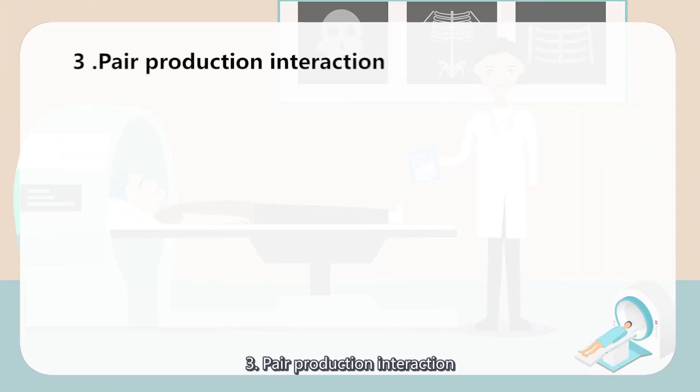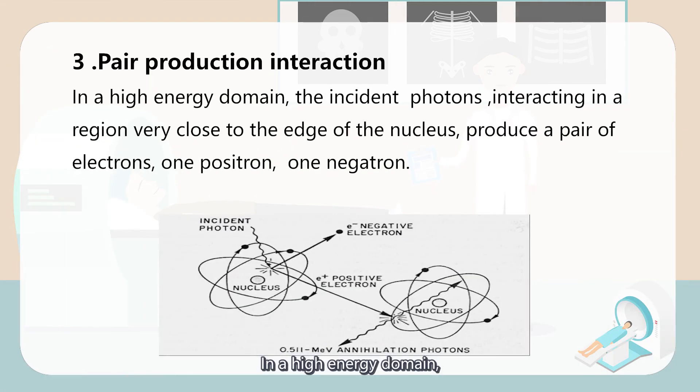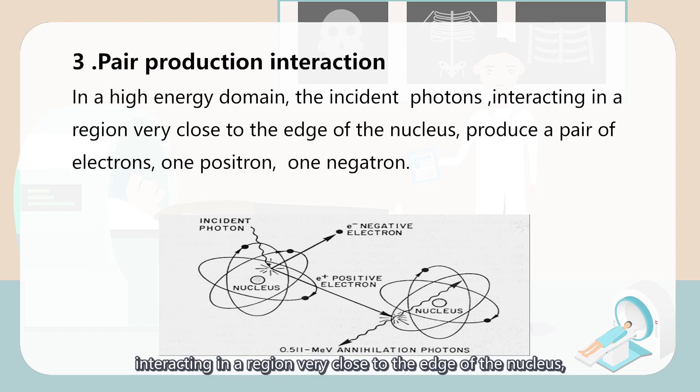And the last mode is pair production interaction. In a high energy domain, the incident photons interact in a region very close to the edge of the nucleus, so it can produce a pair of electrons, one is positron and the other is one negatron.